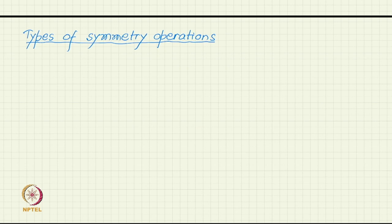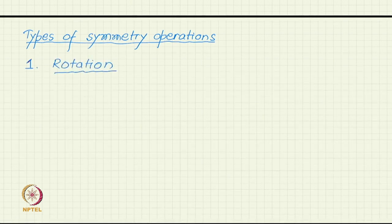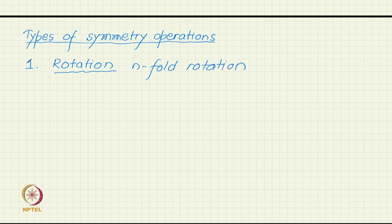Let us now make a list of the possible symmetry operations. We have already seen some of them. We have seen, for example, rotation, and we define the fold of rotation: n-fold rotation is defined by theta-min equal to 360 divided by n.